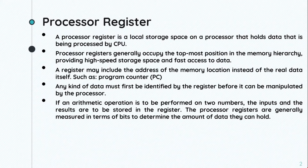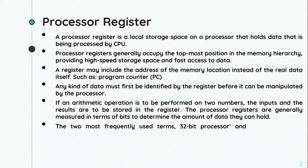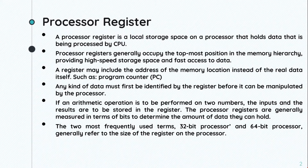Processor registers are generally measured in terms of bits to determine the amount of data they can hold. The two most frequently used terms are 32-bit processor and 64-bit processor, which generally refer to the size of the register on the processor.